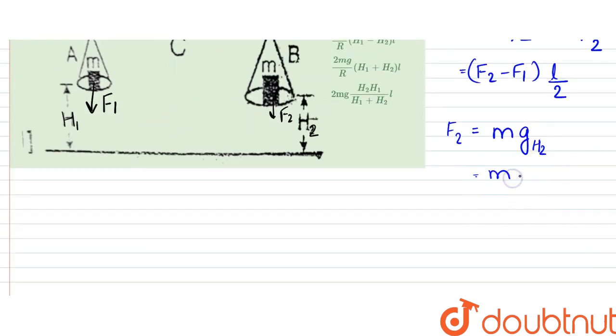Which can be written as MG into 1 minus 2H2 by R. That is the formula.